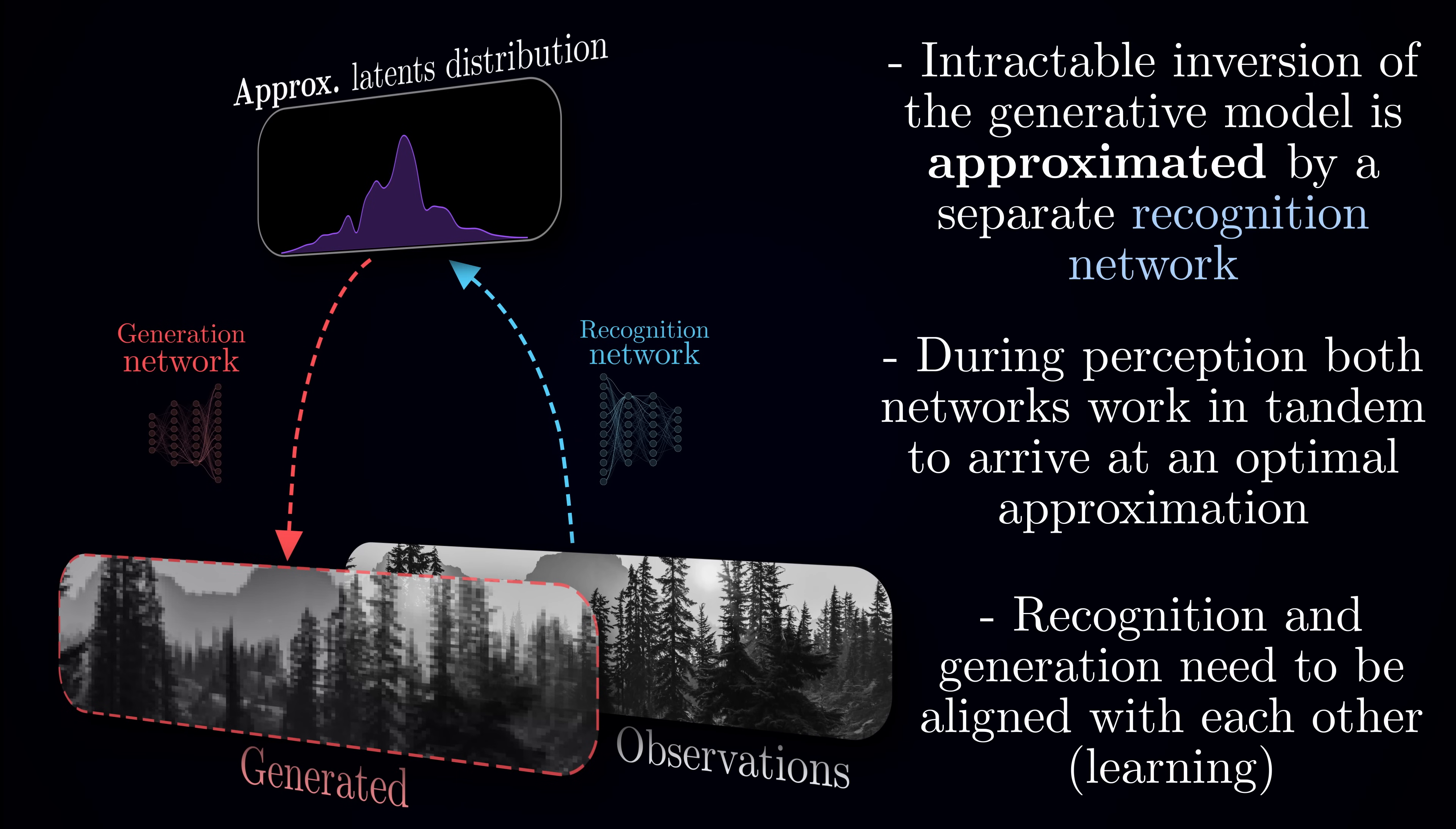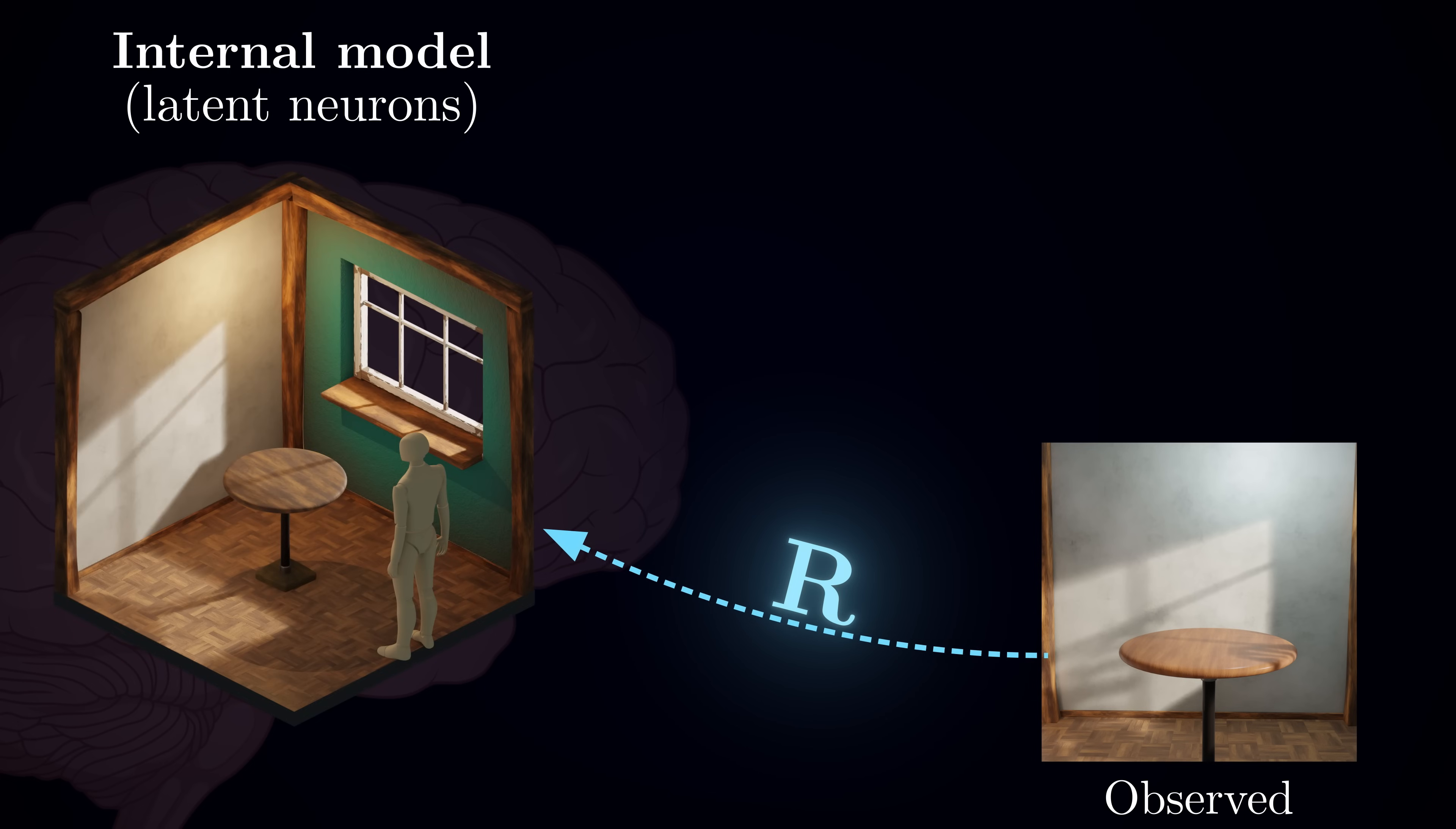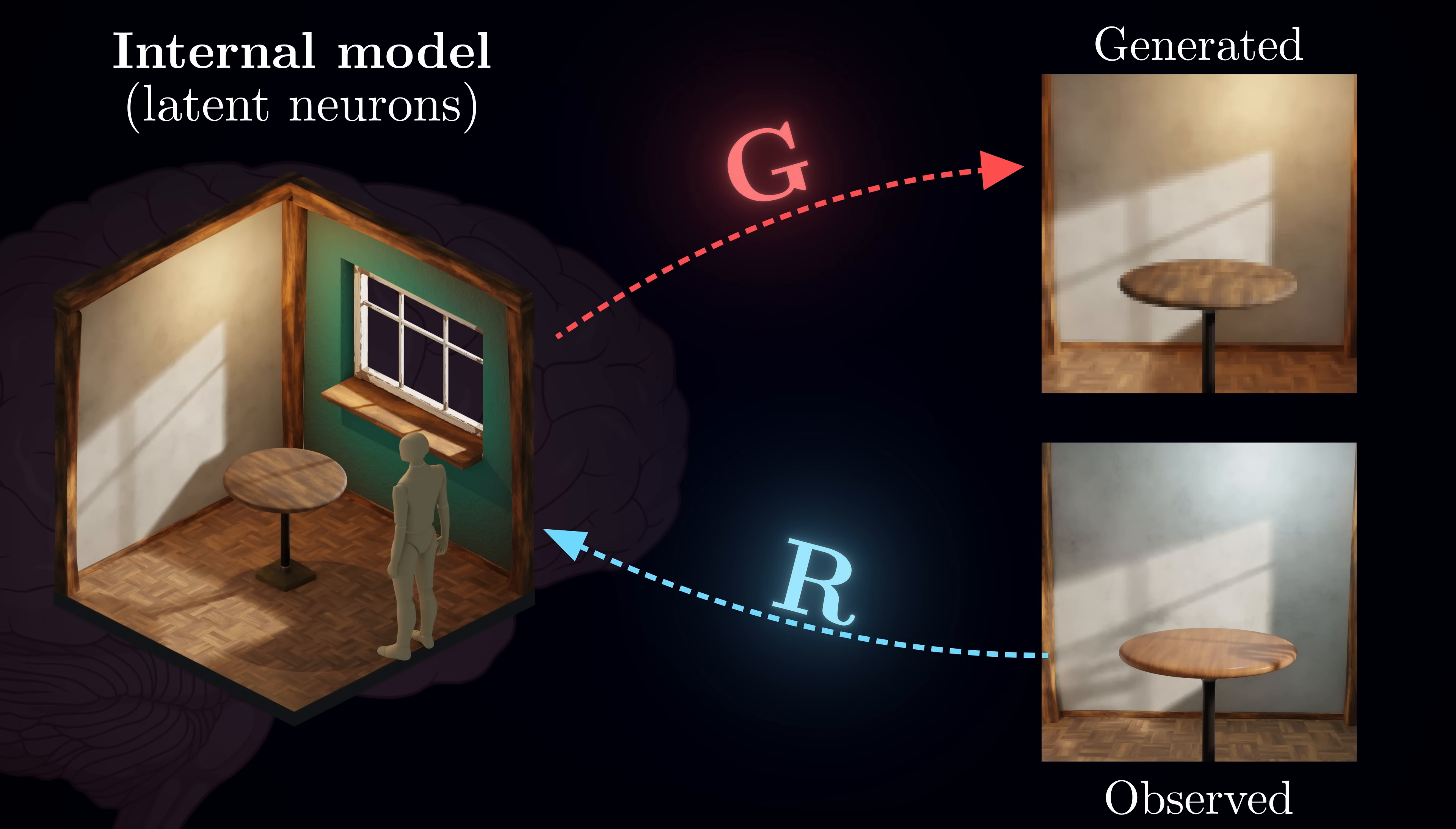Now when we've seen how the brain uses recognition and generative models to make sense of the world, let's see how they work together to minimize free energy. When your brain encounters a new sensory input, these two models engage in a rapid dance. The recognition model proposes possible explanations, and the generative model checks how well they work. If there is a mismatch, if the generative model predicts sensory patterns that don't match what you're actually experiencing, your brain adjusts the explanation and tries again. This back and forth continues until your brain finds an explanation that minimizes free energy, one that explains both the sensory input and aligns well with your prior beliefs. This is the process of perception. When the brain rapidly adjusts the activity of those latent neurons we talked about to refine its explanation until it finds the one that minimizes free energy. This happens incredibly quickly, usually within fractions of a second.